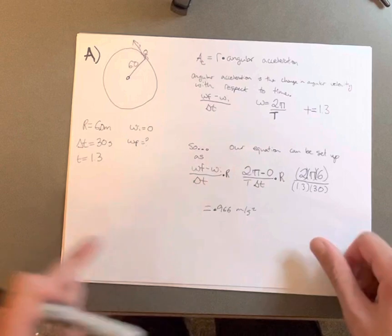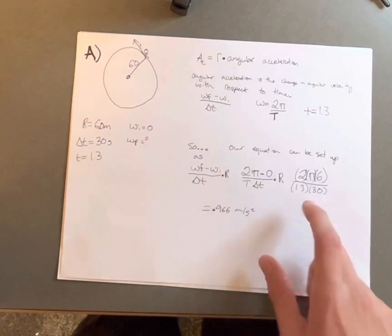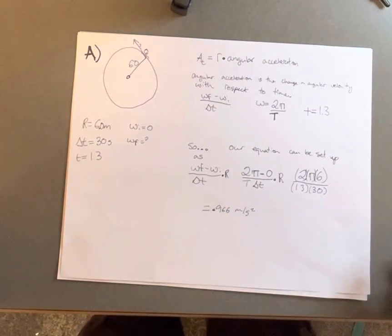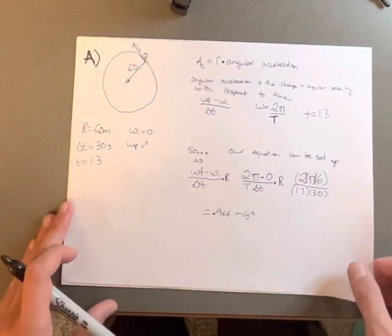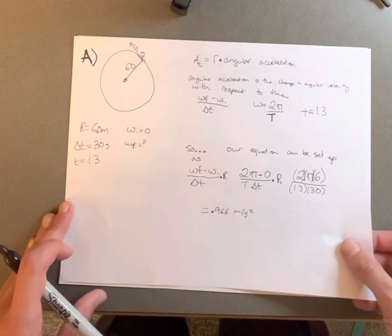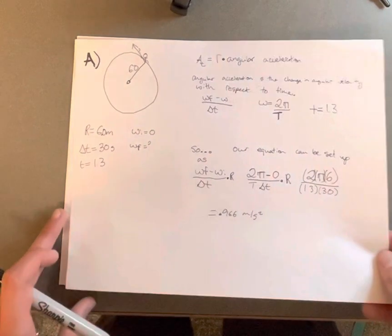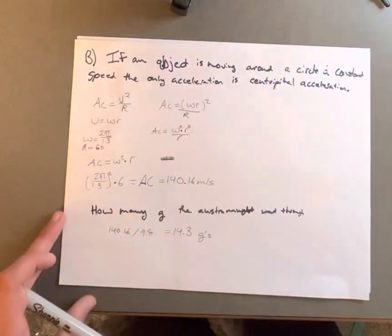We can set this up as 2π over 1.3, divided by 30, which gives us 0.966 meters per second squared. That is our tangential acceleration.